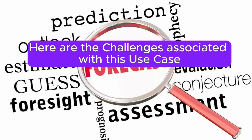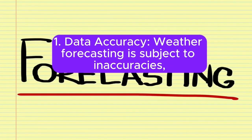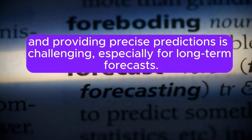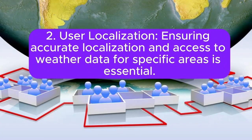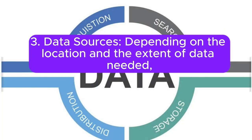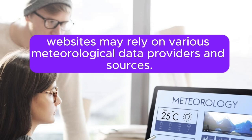Here are the challenges associated with this use case. 1. Data accuracy: weather forecasting is subject to inaccuracies, and providing precise predictions is challenging, especially for long-term forecasts. 2. User localization: ensuring accurate localization and access to weather data for specific areas is essential. 3. Data sources: depending on the location and the extent of data needed, websites may rely on various meteorological data providers and sources.